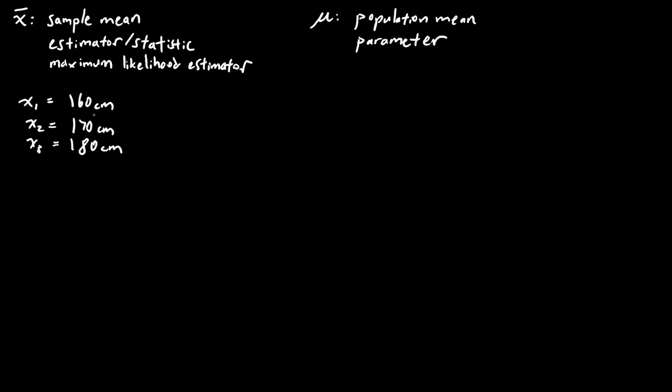Now if I were to just ask you intuitively what's the average here, you'd probably do what you were taught to do in school, in first or second grade, and do x1 plus x2 plus x3 over the number of things that we have, which is 160 plus 170 plus 180 over 3, gives us an average of 170.